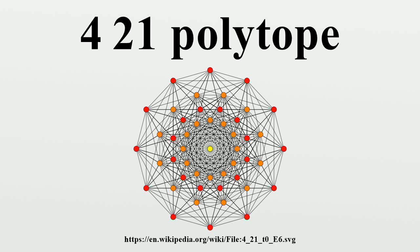The 421 polytope is last in a family called the K21 polytopes. The first polytope in this family is the semi-regular triangular prism, which is constructed from three squares and two triangles. The 421 is related to the 600-cell by a geometric folding of the Coxeter-Dynkin diagrams.